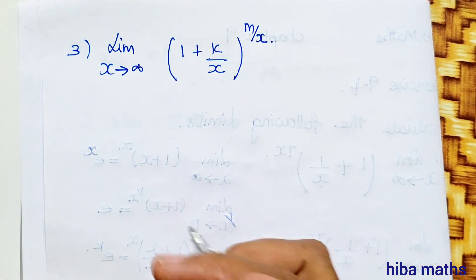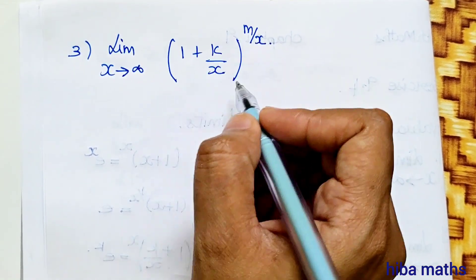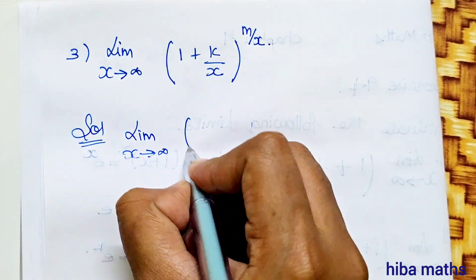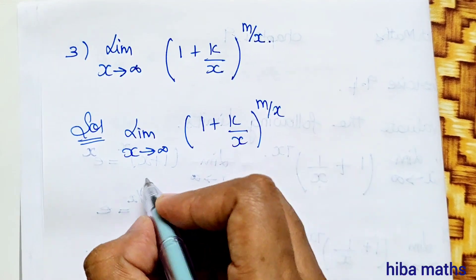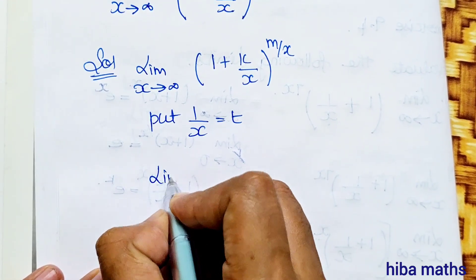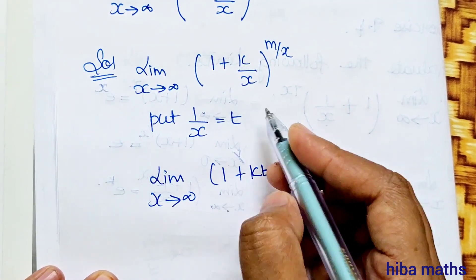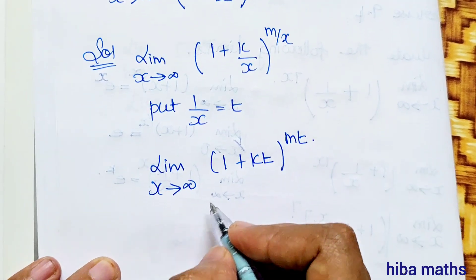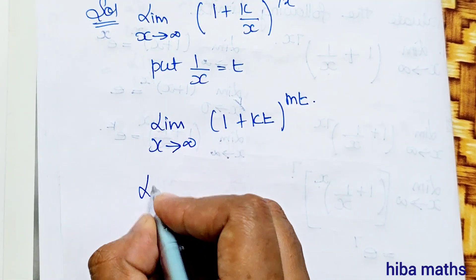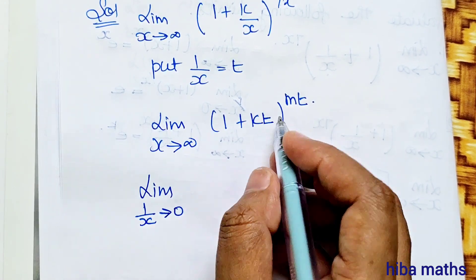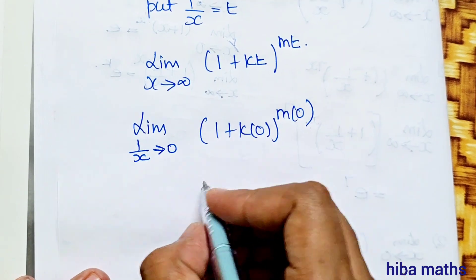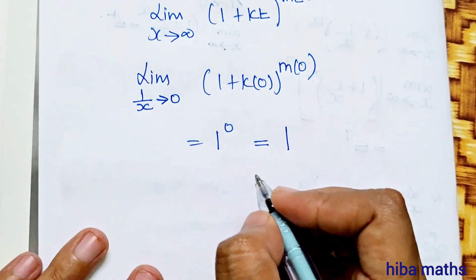Third question: Limit x turns to infinity, 1 plus k by x, whole power 1 by x. Since the power is 1 by x, as x turns to infinity 1 by x turns to 0, so 1 power 0 is 1. Correct?